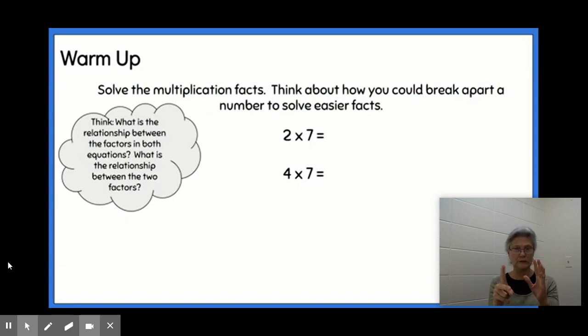We know that something times two is doubling that other factor. So if I know that two times seven is 14, I can just double 14 to get 28. So four times seven is 28 because it's double seven and doubled again.